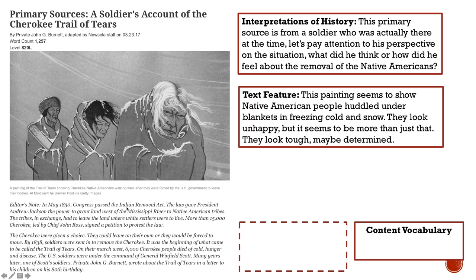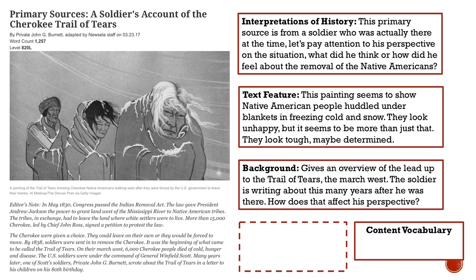Here's an editor's note. In May 1830, Congress passed the Indian Removal Act. The law gave President Andrew Jackson the power to grant land west of the Mississippi River to Native American tribes. The tribes, in exchange, had to leave the land where white settlers were to live. More than 15,000 Cherokee, led by Chief John Ross, signed a petition to protest the law. The Cherokee were given a choice: leave of their own accord or be forced to move. By 1838, soldiers were sent in to remove the Cherokee — the beginning of what came to be called the Trail of Tears. On their march west, 6,000 Cherokee people died of cold, hunger, and disease.